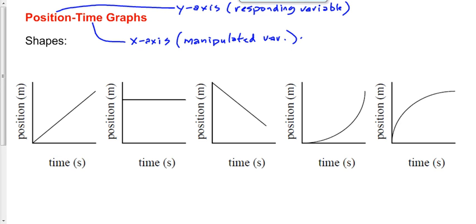Let's go through the first one: position versus time — position on the y-axis, time on the x-axis. This is a straight line going upward. What does it tell us is happening to the object — the car, the person, the bug, whatever it is? Describe the motion in words like we've been doing up until now.